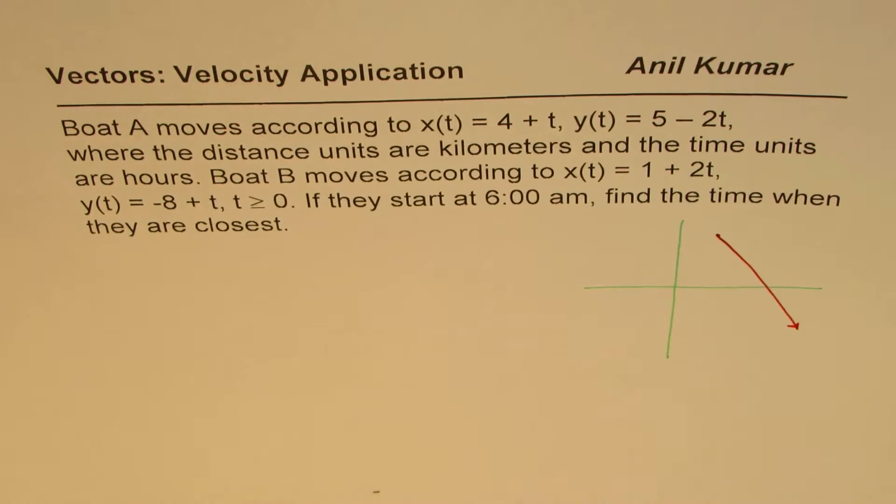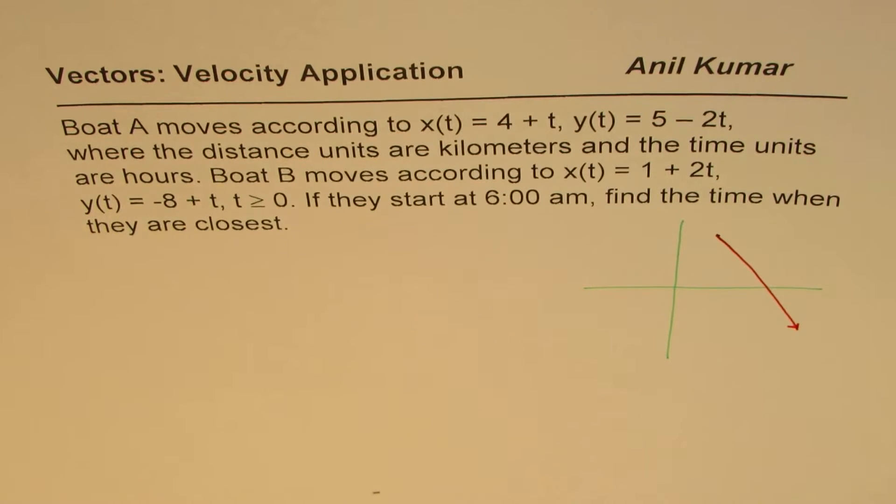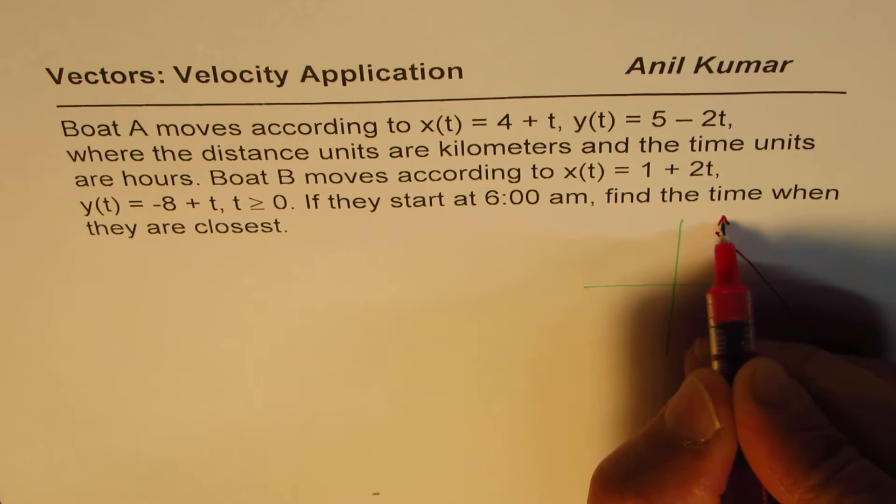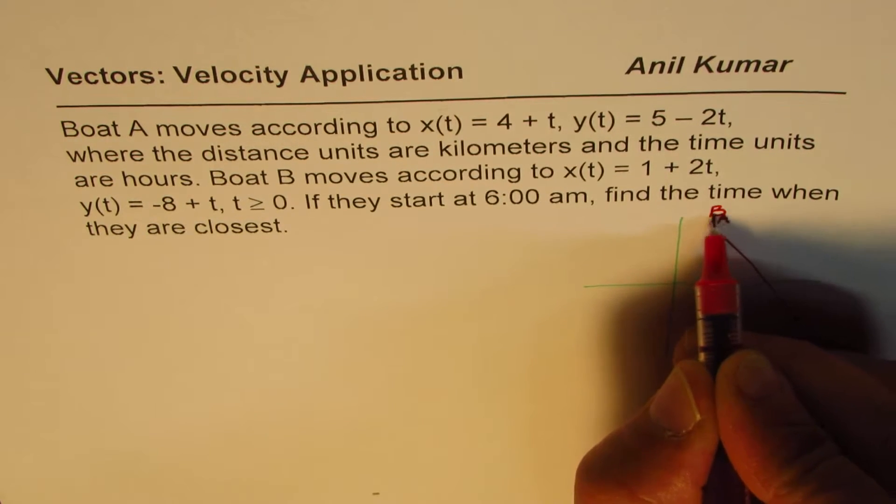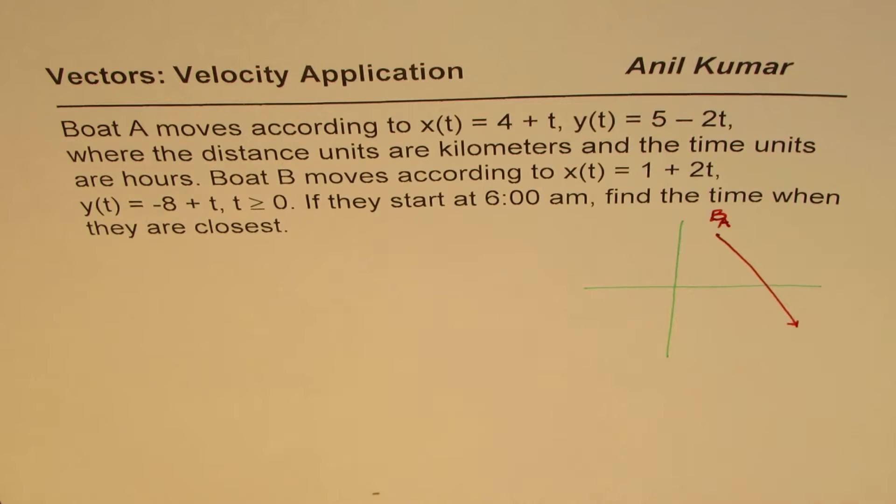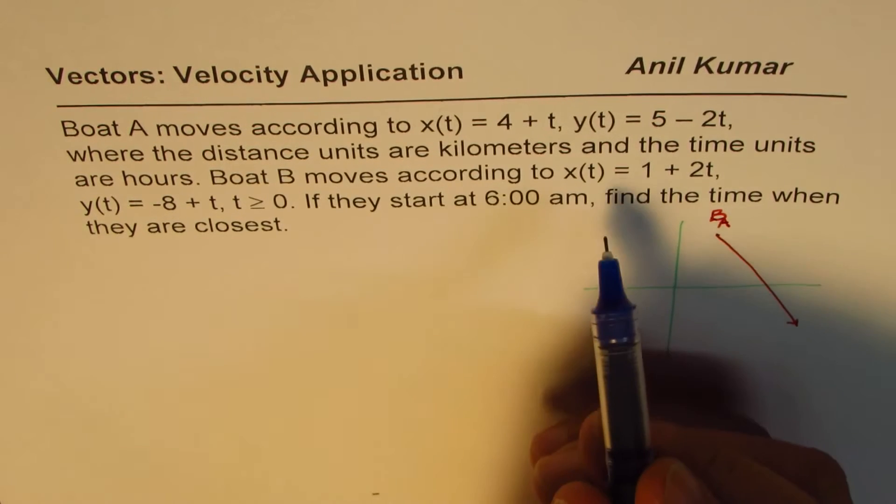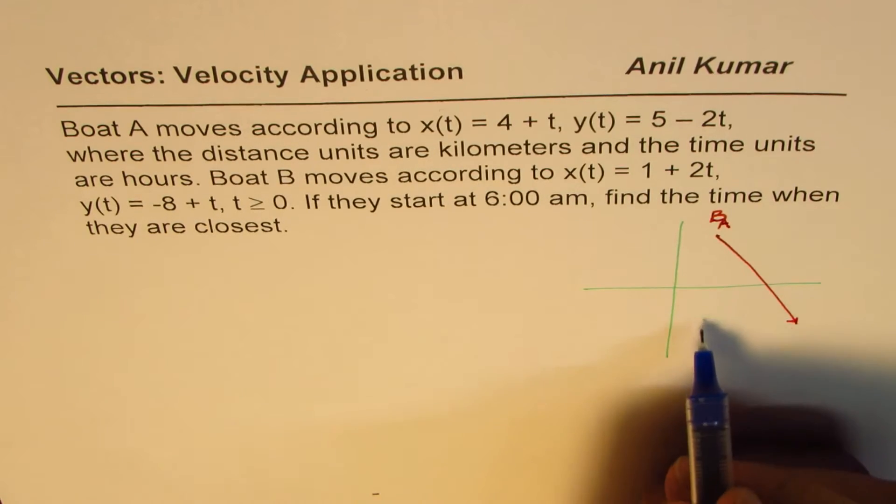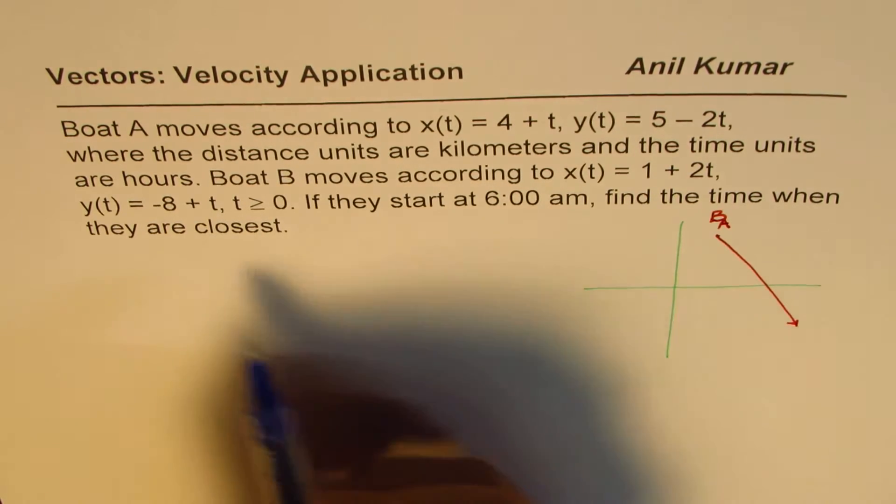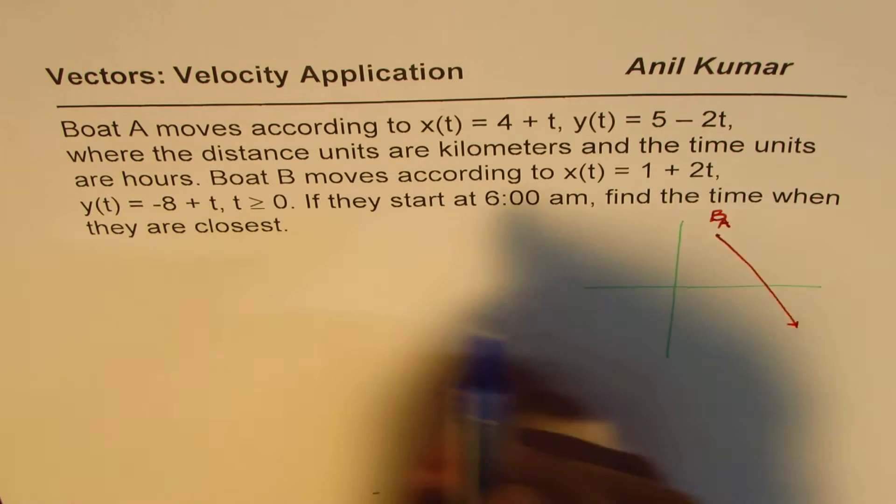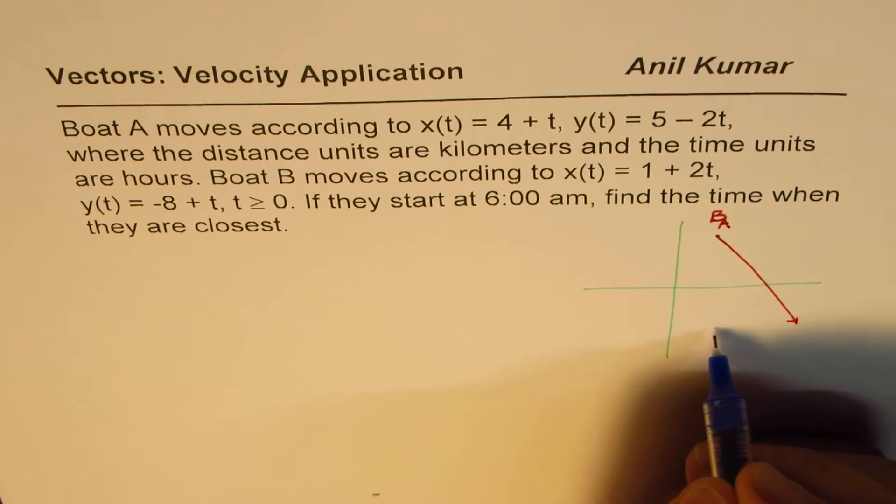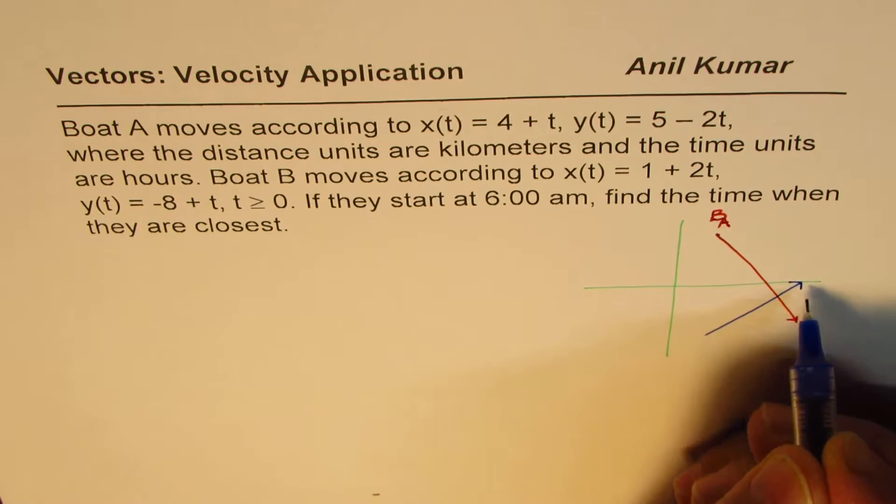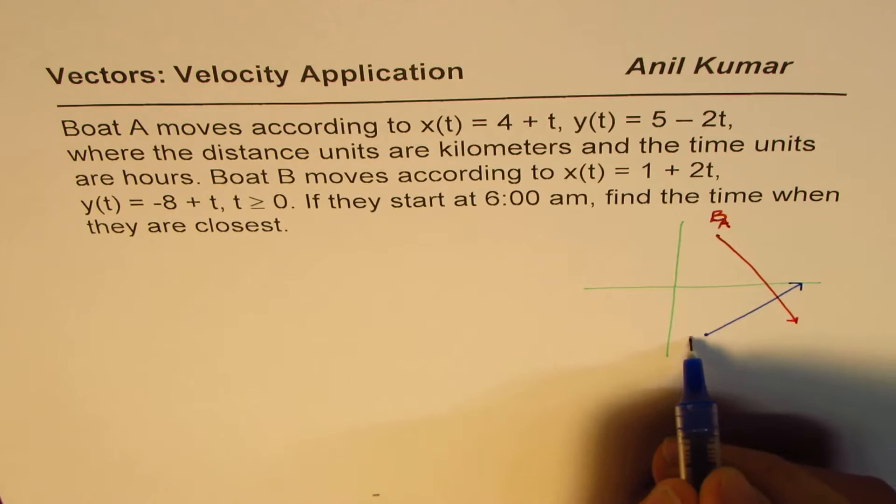Then we have another boat, B. This is boat A. And then we have boat B, which is at (1, -8). So 1, -8 kind of here. And it moves 2 and 1 up, so kind of much below and moves like this. So that is our boat B.